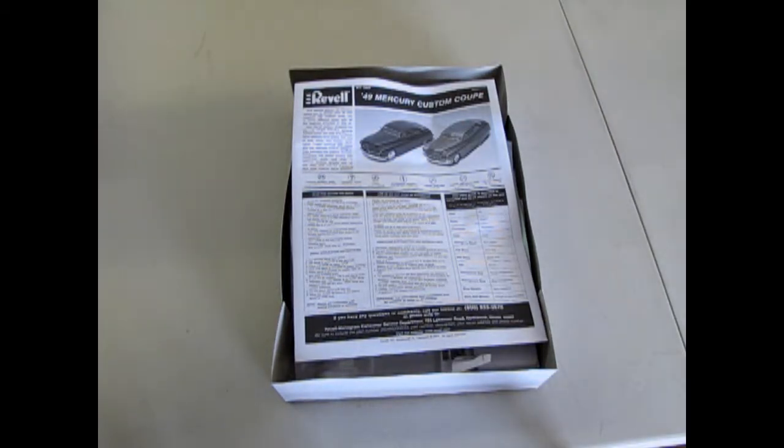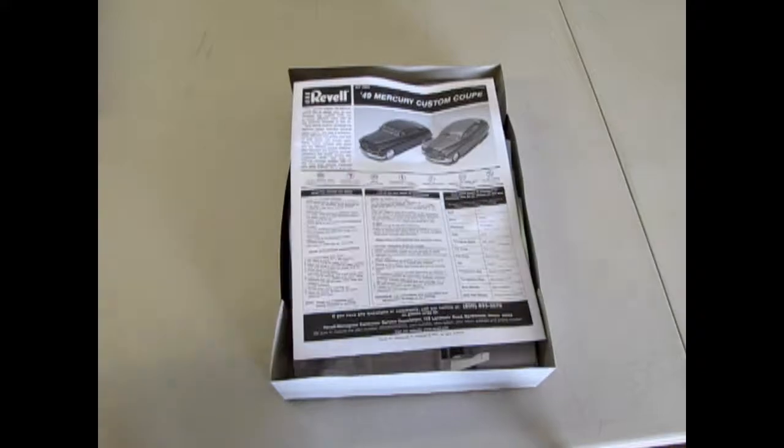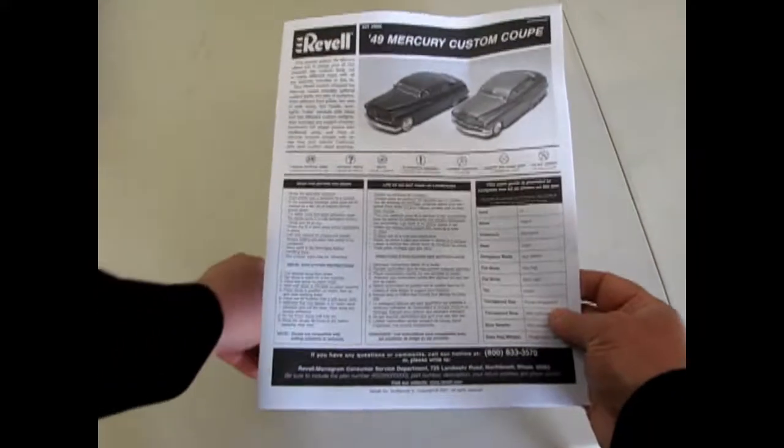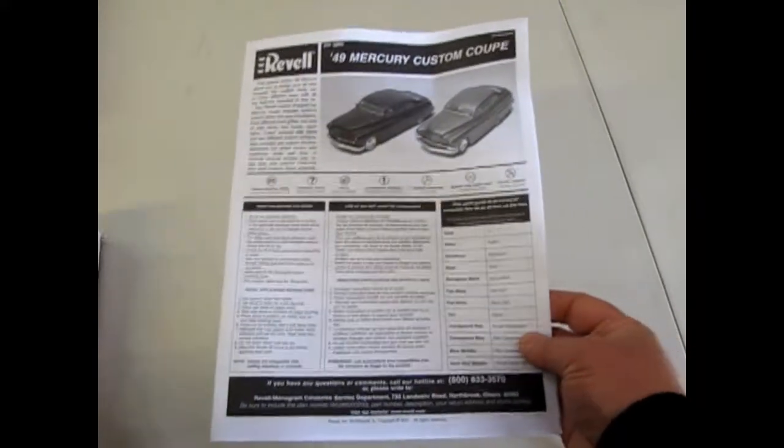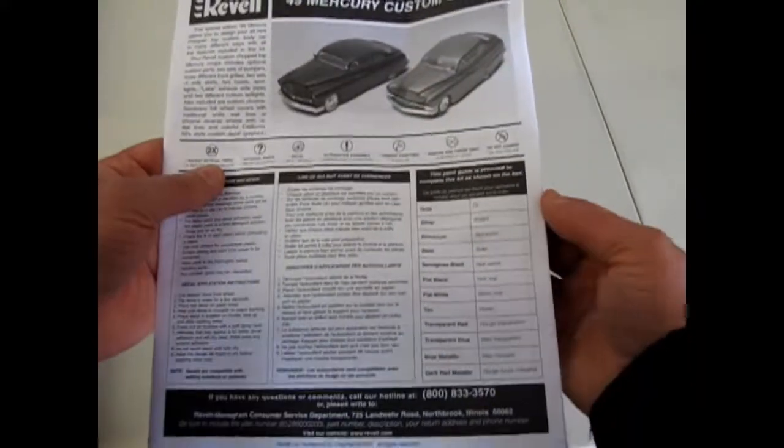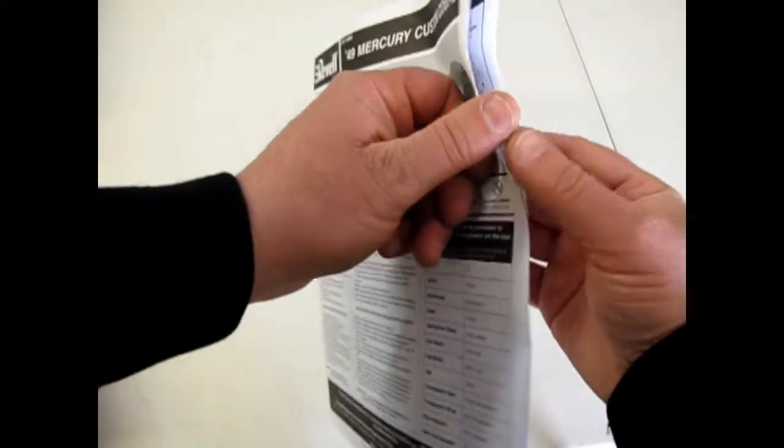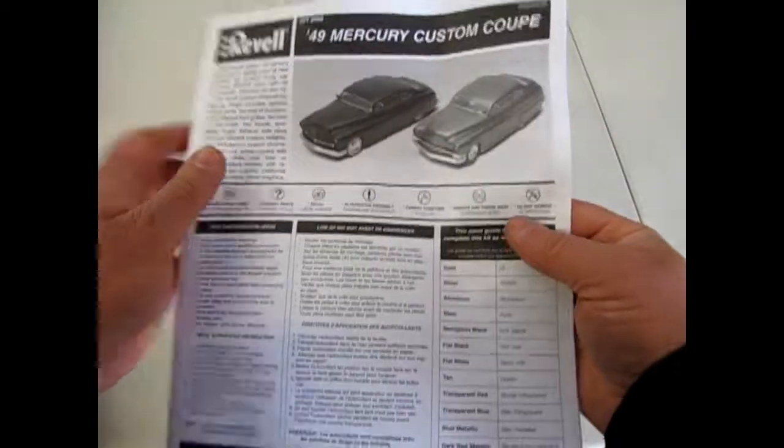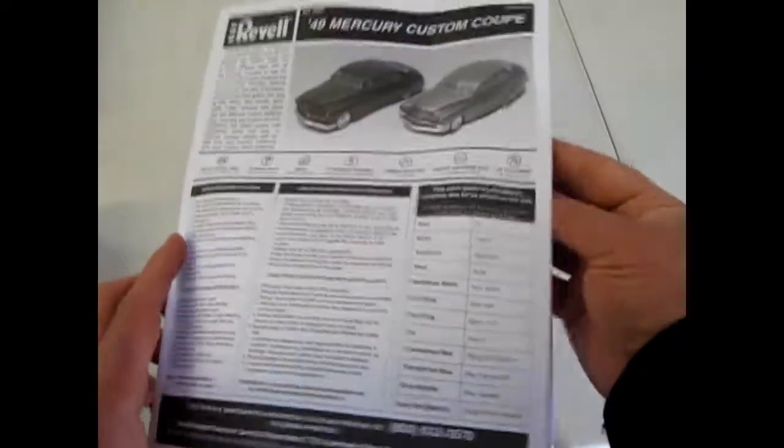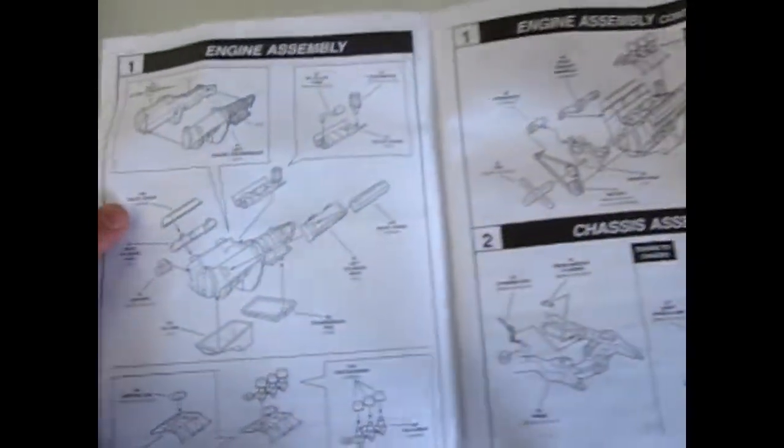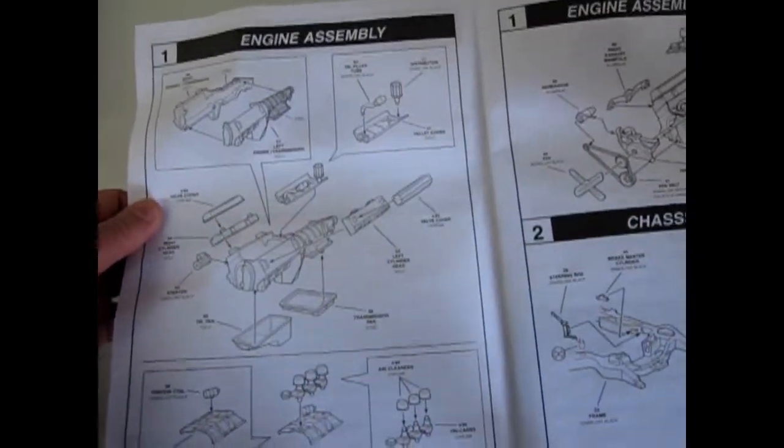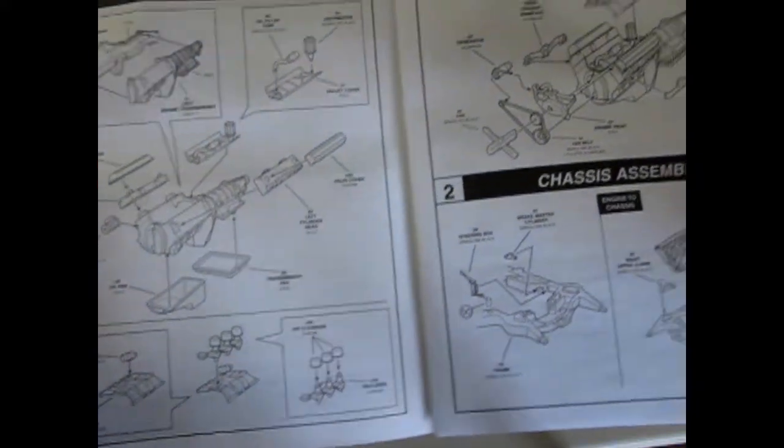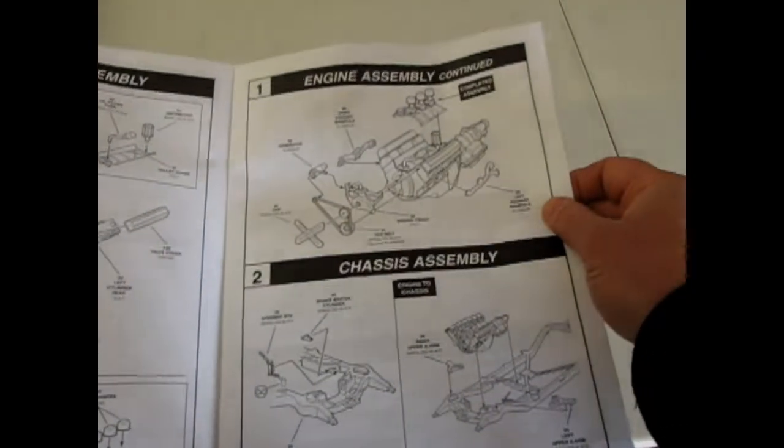Now, originally I got this kit because in our model car club we were going to build this, but I never got mine done. So here's the instructions for this Mercury Custom Coupe. This is quite an interesting kit because, unlike the AMT 49 Mercury, this one is completely customized, starting with the engine, which seems to be a Cadillac style. Cadillac engines were very popular in these cars as a custom swap.